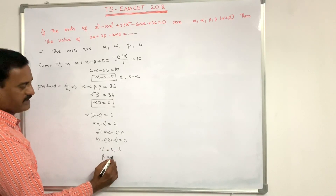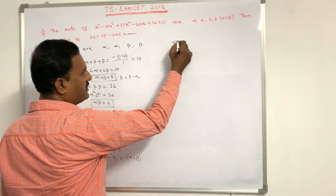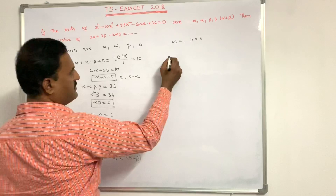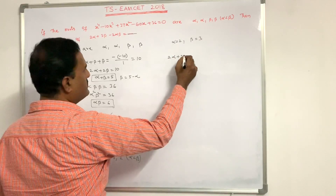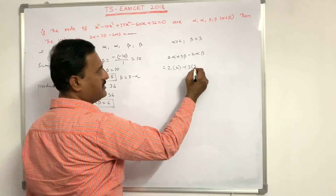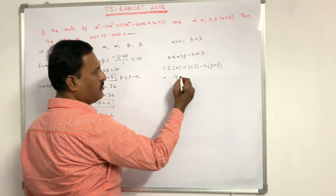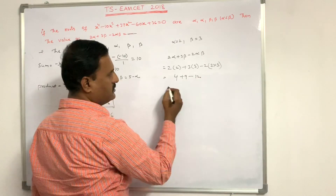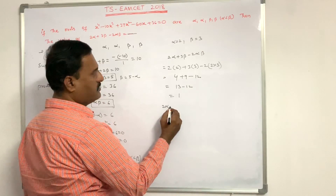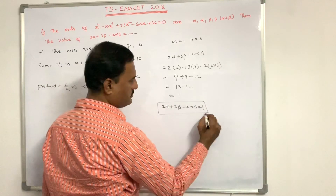Since α < β, we take α = 2 and β = 3. Substituting into 2α + 3β - 2αβ: = 2(2) + 3(3) - 2(2)(3) = 4 + 9 - 12 = 13 - 12 = 1. The value of 2α + 3β - 2αβ is equal to 1. That is the answer.